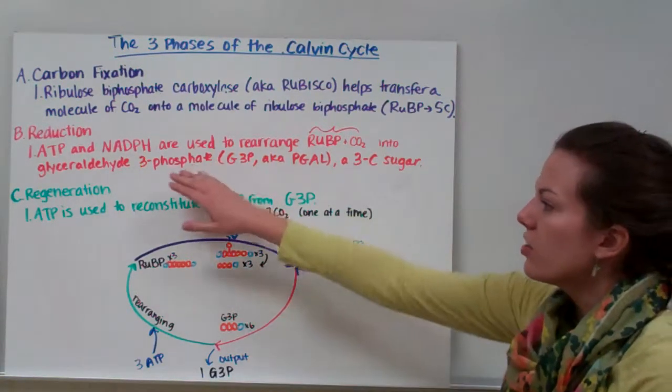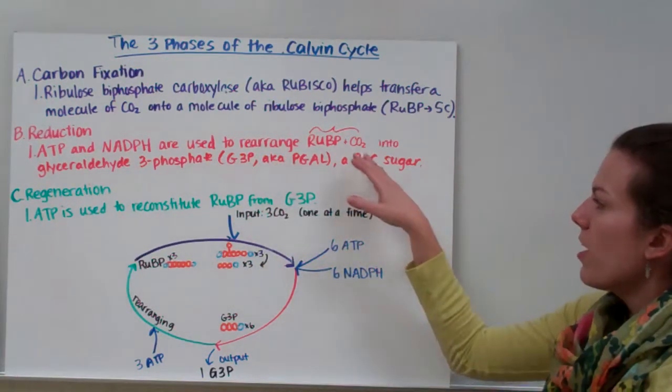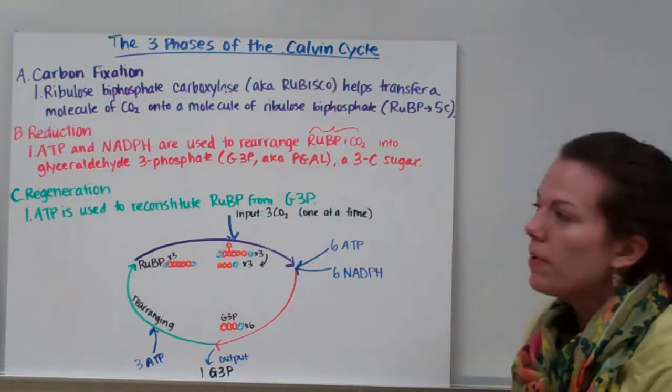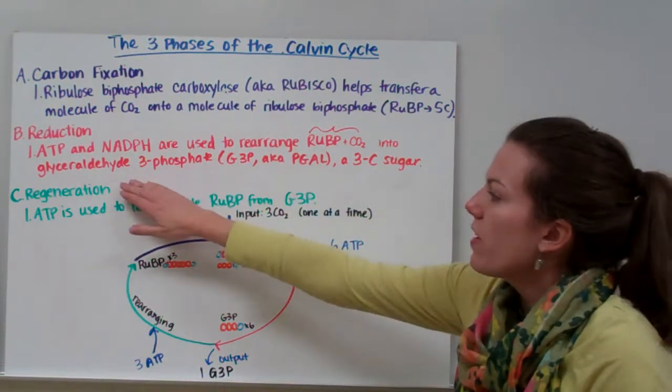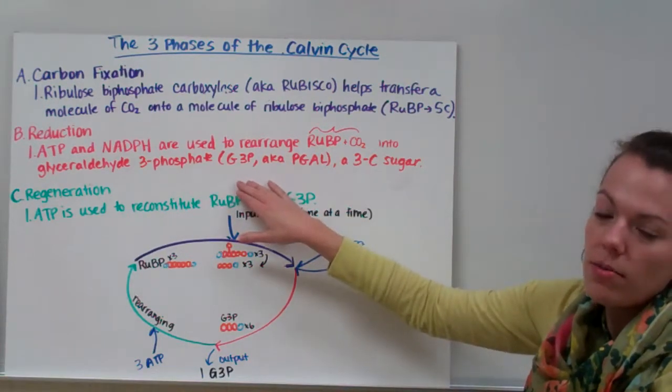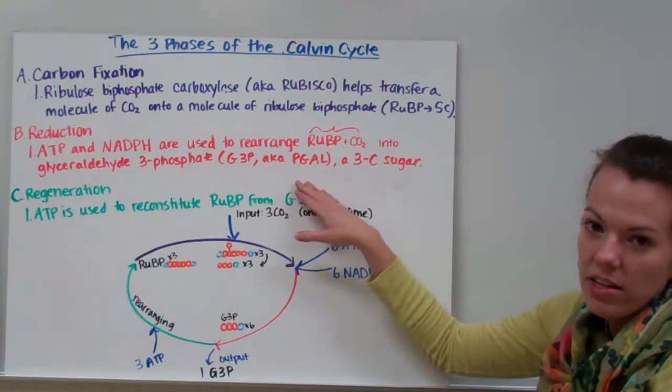Our second phase is reduction. During reduction, ATP and NADPH are used to rearrange that intermediate where we've added carbon dioxide to RUBP. We use energy to rearrange it into glyceraldehyde 3-phosphate, which is known as G3P. G3P is also known as PGAL. It's a three-carbon sugar.